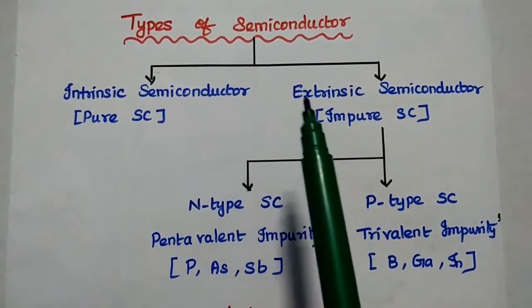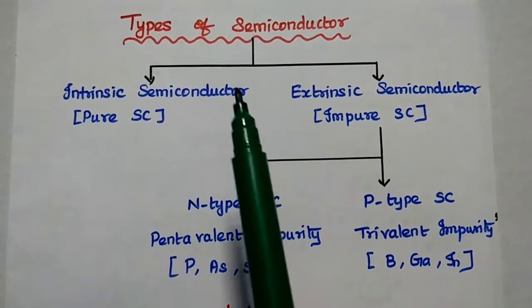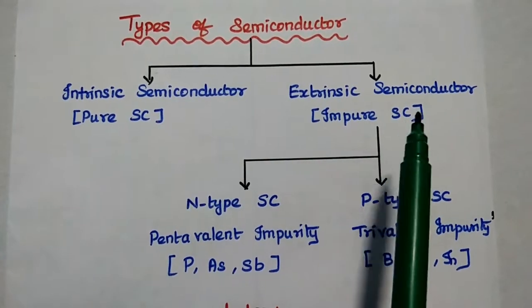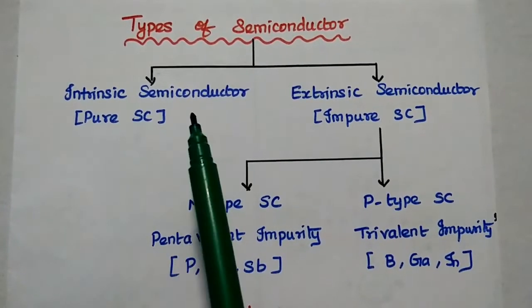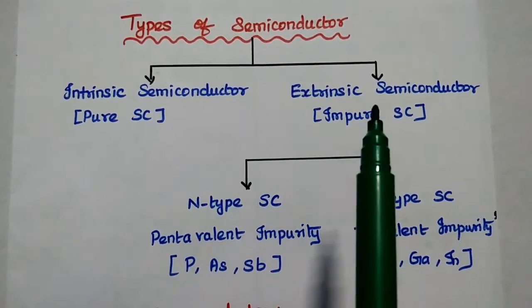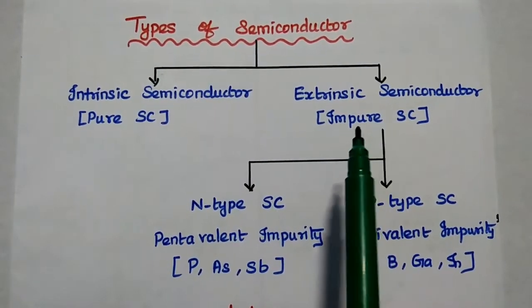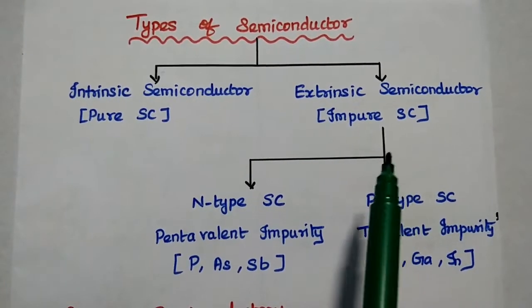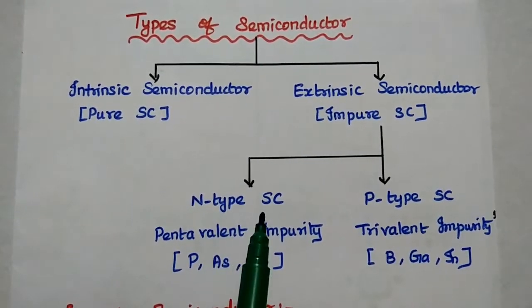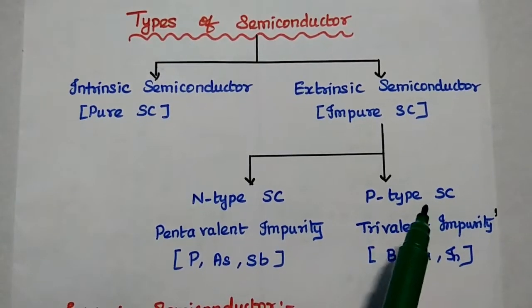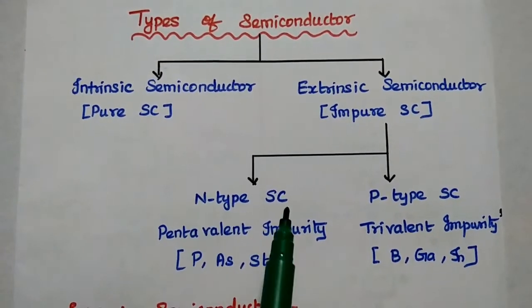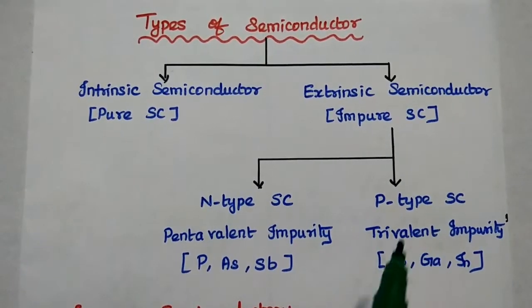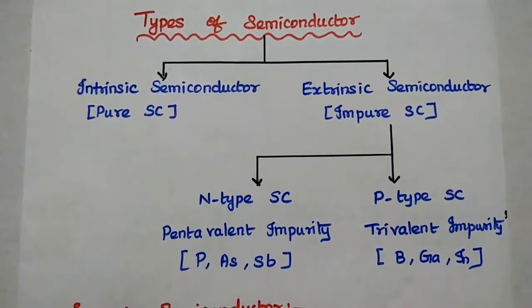Semiconductors are broadly classified into intrinsic semiconductor and extrinsic semiconductor. Intrinsic semiconductor is also called pure semiconductor. Extrinsic semiconductor is called impure semiconductor. Extrinsic semiconductor is further classified into N-type semiconductor and P-type semiconductor. In N-type, we use pentavalent impurity; in P-type, we use trivalent impurities.